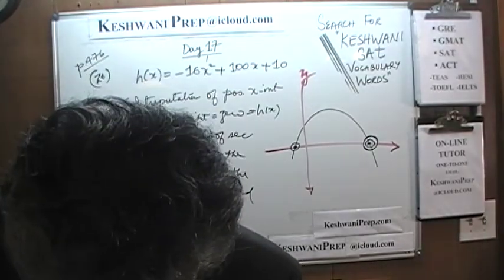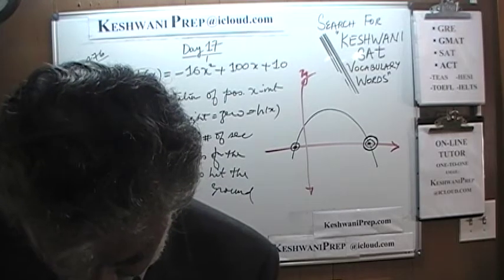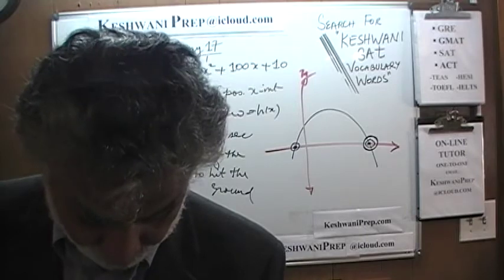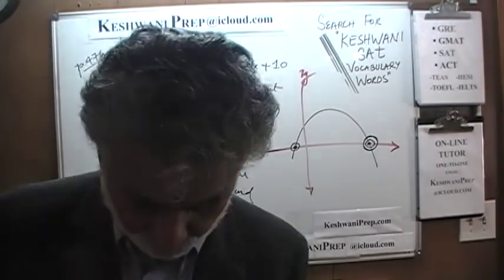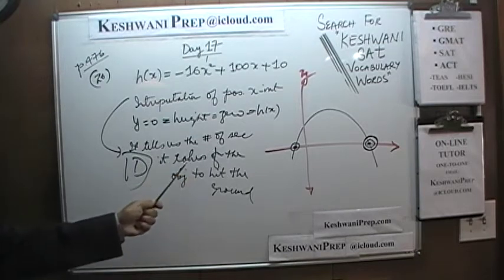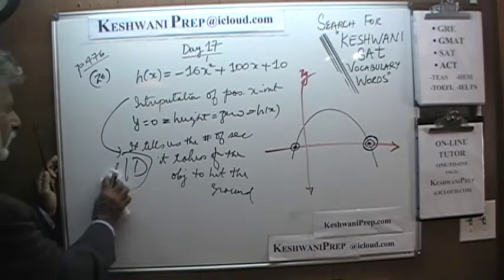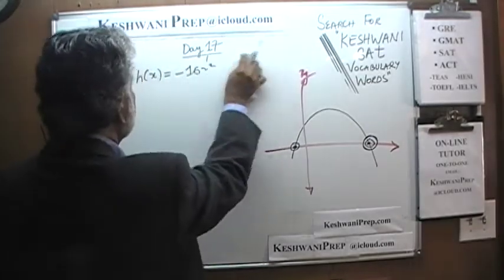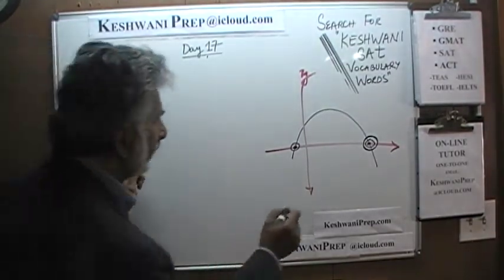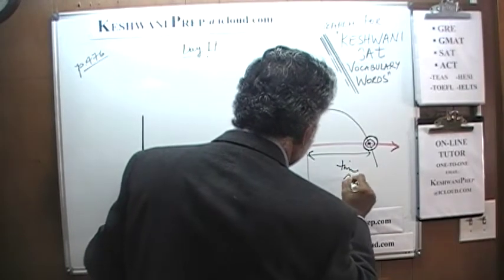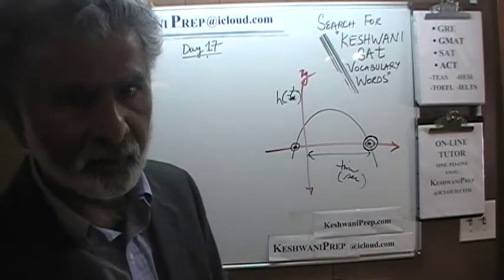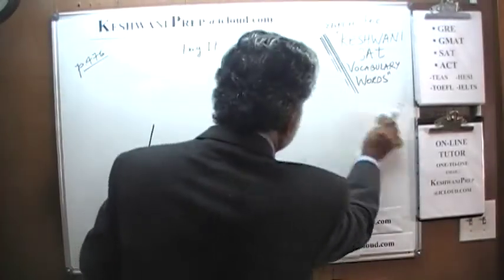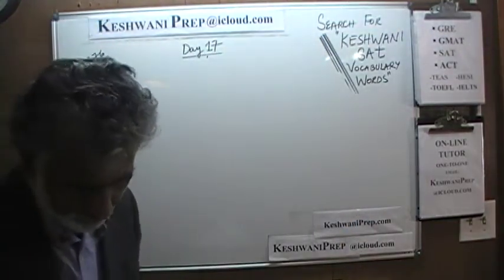The interpretation of the x-intercept is that it tells us the number of seconds it takes for the object to hit the ground. Looking at the answer choices: it's not the initial height, not the maximum height, and not the time it reaches maximum height. The answer is D — the time at which the projectile hits the ground. Whether you use the letter T or X to represent time, it doesn't matter. That was number 26.